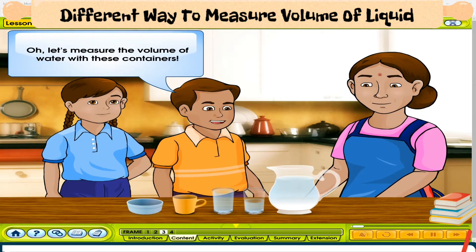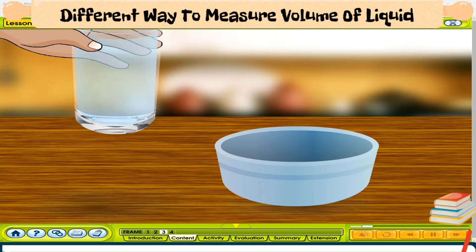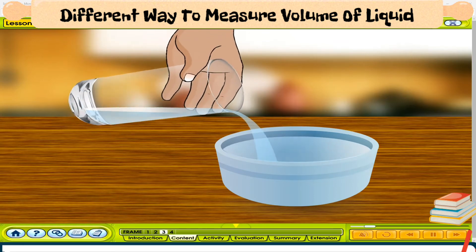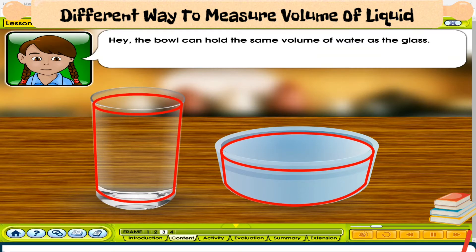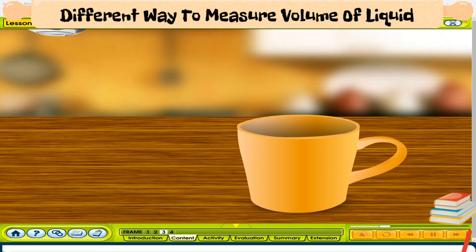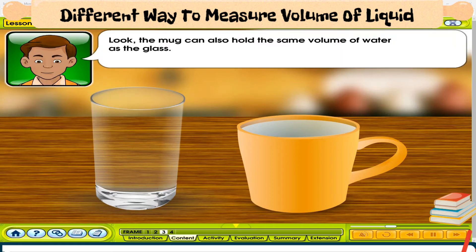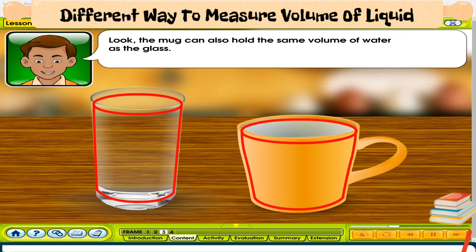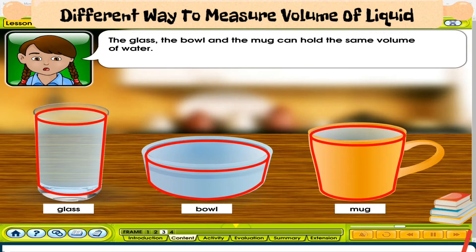Let's measure the volume of water with these containers. I will pour the glass of water into this bowl. The bowl can hold the same volume of water as the glass. I will pour the glass of water into this mug. The mug can also hold the same volume of water as the glass. The glass, the bowl, and the mug can hold the same volume of water.